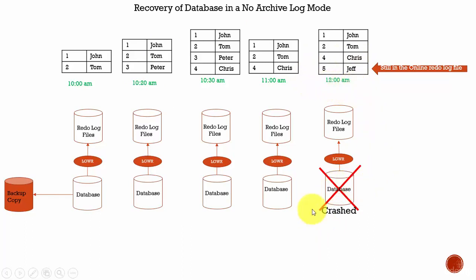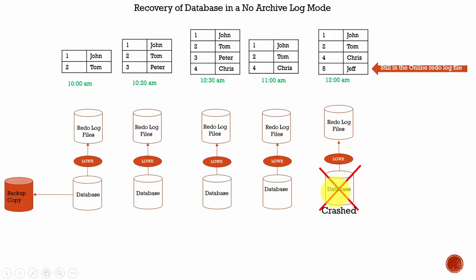At 12 a.m., the database crashed. As a DBA, you need to consider whether the database is running in archive log mode or no archive log mode. This scenario is in no archive log mode, meaning there are no copies of redo log files maintained. The only alternative is to recover the database from the last backup, which was taken at 10 a.m. We restore it at 12 a.m., but we only have two rows in the customer table. All changes made between 10 a.m. and 12 a.m. are lost. This is the problem with no archive log mode.